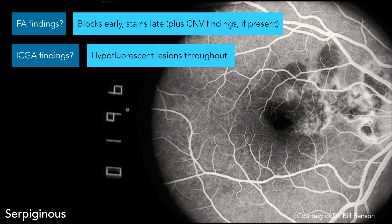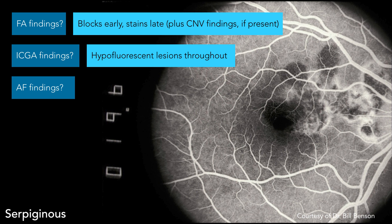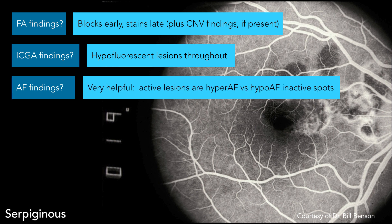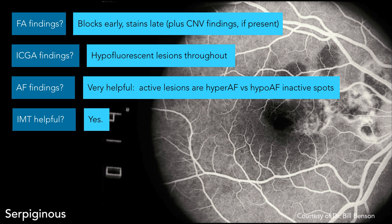ICGA findings: you just get these hypofluorescent lesions throughout all the phases. Autofluorescence findings — I don't think anybody ever asked this question, but I think autofluorescence helps the most of all the white dots with serpiginous. The active lesions are going to be hyperautofluorescent right at the border, and the inactive ones are going to be hypo. We used to do repeat FAs every time somebody came in with this — now we do autofluorescence a lot more; it's less invasive. These are one of the ones in which we do use IMT because you can think of IMT as being used for anybody who has a poor visual prognosis.